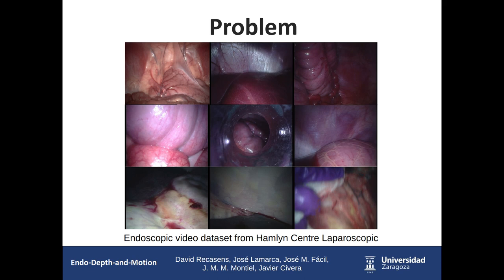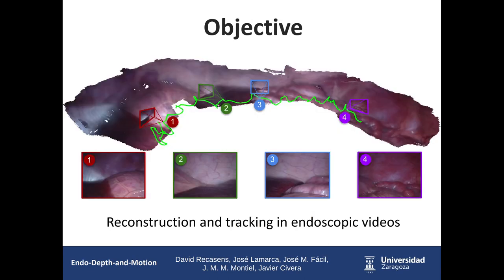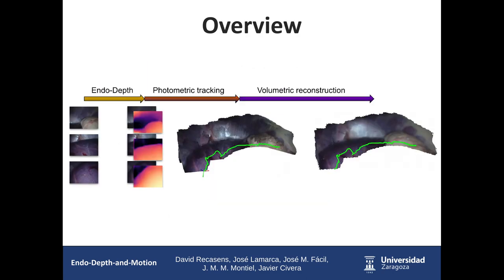We use the Hamelin dataset with 21 sequences of stereo endoscopies in in-vivo animals. The objective of this work was to create a method capable of calculating the position of the camera with its 6 degrees of freedom and creating models of dense 3D scenes from monocular endoscopy videos only. Our approach takes advantage of recent advances in self-supervised depth networks to generate pseudo-RGBD images, then tracks the camera position using photometric residuals, and finally merges the recorded depth maps into a full volumetric representation of the scene.